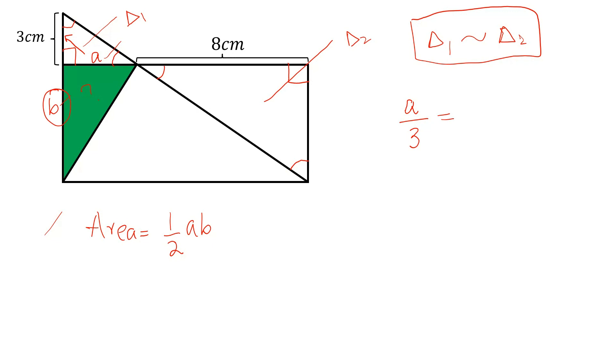So we can write A by 3 will be equal to 8 divided by B. By cross-multiplication, we can get AB is equal to 24.